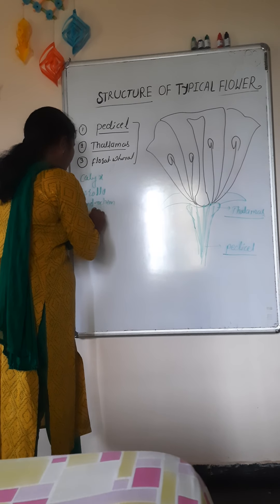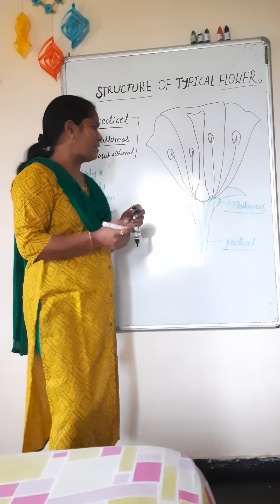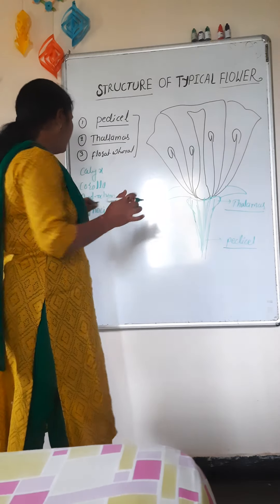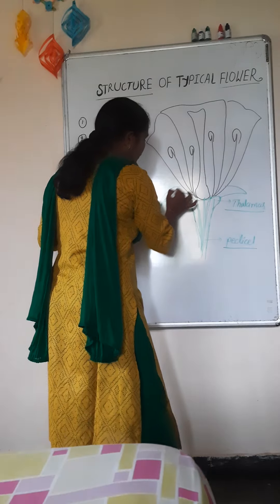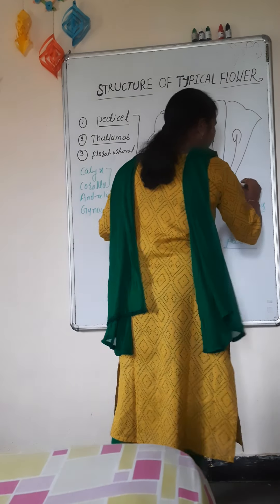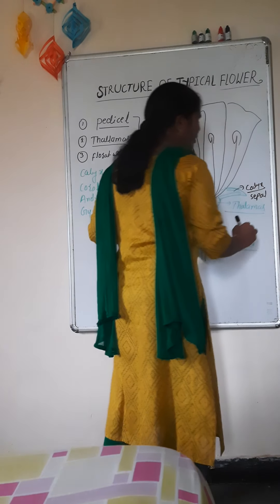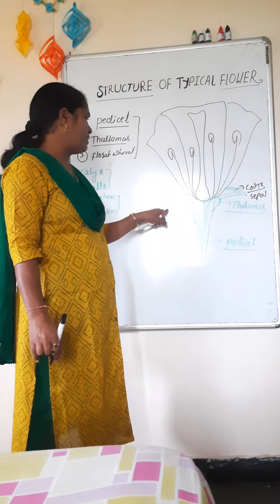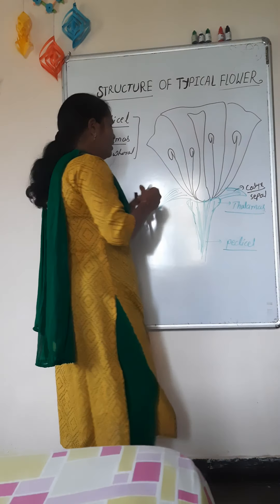What is meant by accessory? The whorls that do not take part in sexual reproduction are called accessory. And those that directly participate in sexual reproduction are called essential. The first is the calyx — the green leaf-like structure. The individual part of the calyx is called the sepal. The main functions are: to protect the inner whorls during the bud condition, and due to the green color, they can perform photosynthesis.